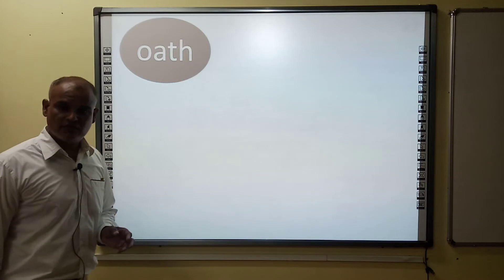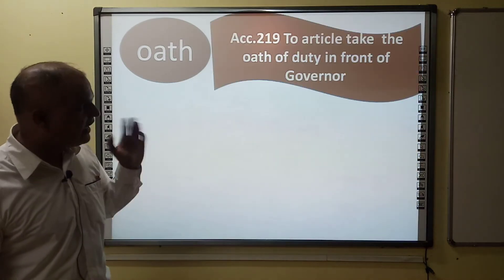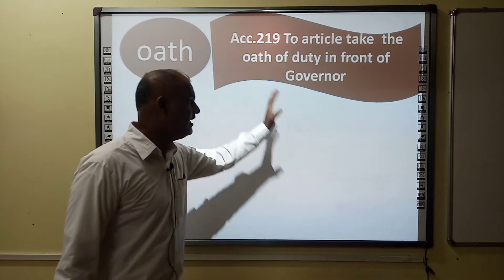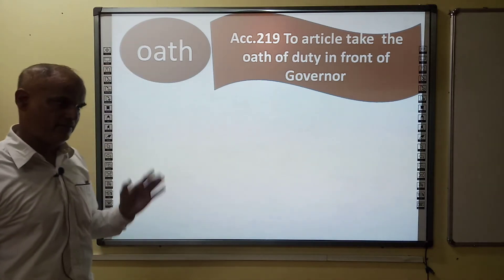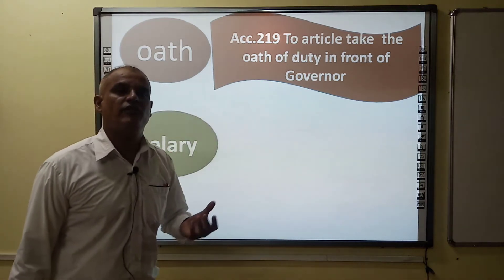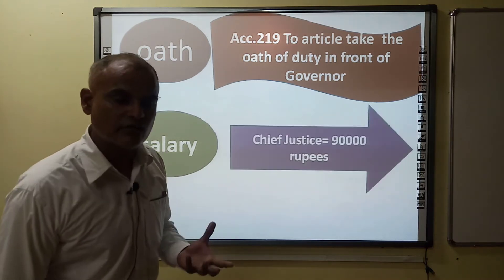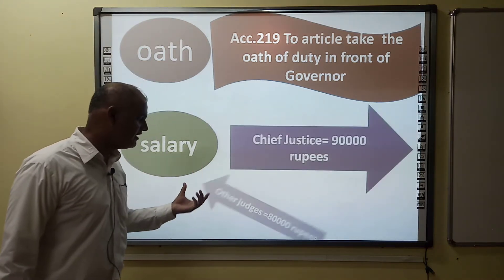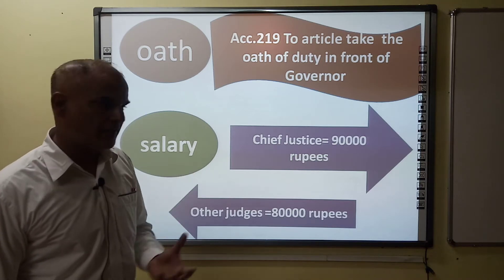The judges of the High Court take an oath of duty and secrecy in front of the Governor. Regarding salary, the Chief Justice of the High Court receives a salary of 90,000 rupees and other judges receive a salary of 80,000 rupees.